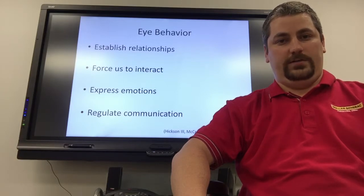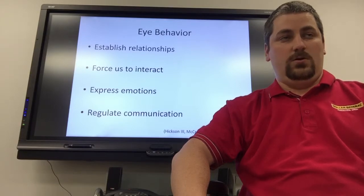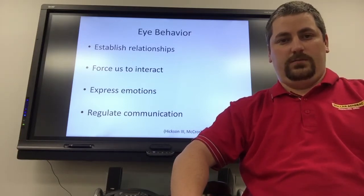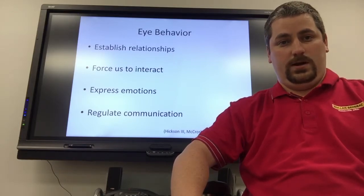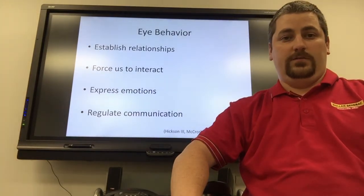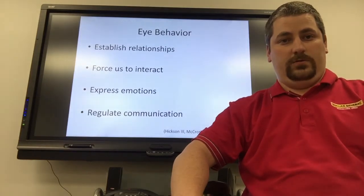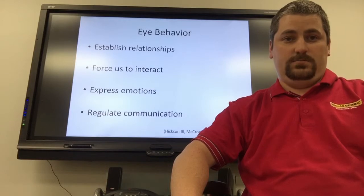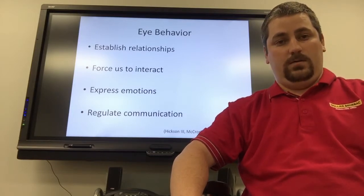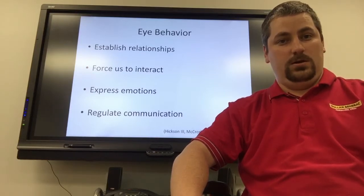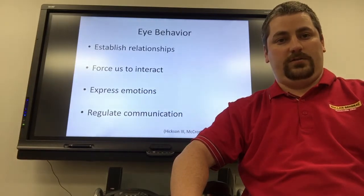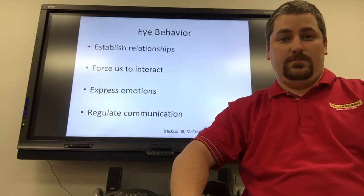Eye contact also regulates communication. When a person is communicating with somebody, or even in a meeting, people use eye contact to regulate whose turn it is to speak. For instance, if I'm speaking to somebody and I want them to go away, I will avert my eyes and look towards the wall or the floor. Looking at my watch may indicate to a person that I don't have time or don't want to speak to them. On the other hand, if I keep eye contact with a person while they're speaking to the amount culturally accepted, the person may continue to speak and know — or at least think — that I'm interested.